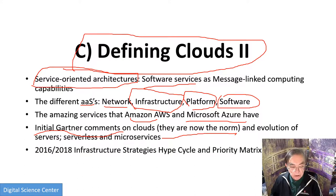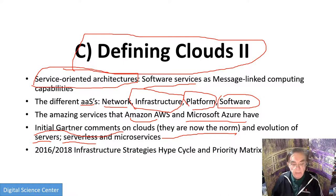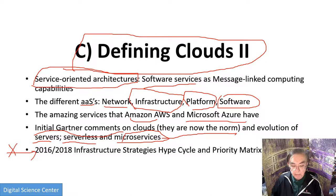We look at the evolution of servers and the serverless concept, which is really not serverless — it's server-hidden. There are servers, but the user doesn't instantiate them; the system does. The user just instantiates the software, typically function as a service and microservices. Then we have a discussion of infrastructure strategies: how you build a data center, what components go into it, including both the hype cycle and the priority matrix.